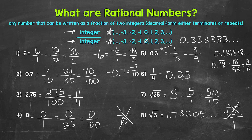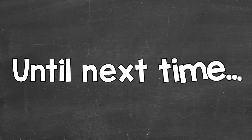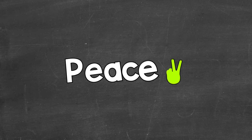As far as rational numbers go, if we can write it as a fraction of two integers, then that number is rational. If the decimal form either terminates or repeats, that also shows we have a rational number. That's an explanation of what rational numbers are — I hope that helped. Thanks so much for watching. Until next time, peace.